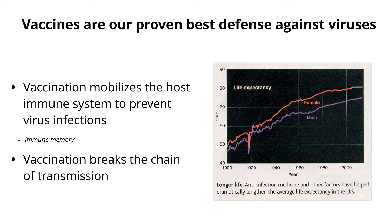They depend on memory. And importantly, they break the chain of infections of virus going from one person to another. This is a graph of life expectancy in humans from about 1900 to past 2000. You can see in the 1900s, you could expect to live about 50 years. And now you can expect to live between 70 and 80 years depending on your gender. A good part of this longevity increase is public health measures, sanitation, antimicrobials, antivirals, and vaccines, and having health care available to more people. So vaccines are a big part of this.